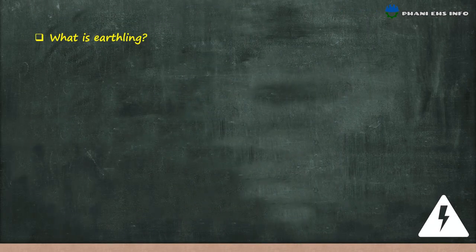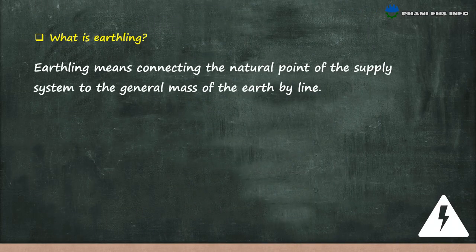What is earthing? Earthing means connecting the neutral point of a supply system to the general mass of earth by a conductor.